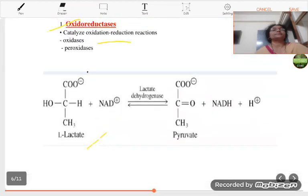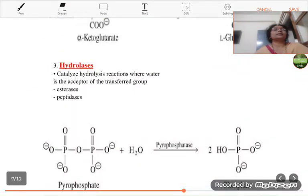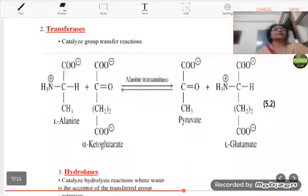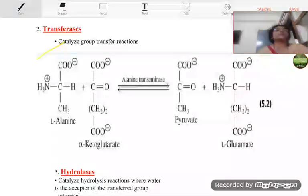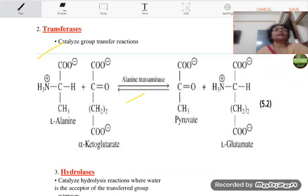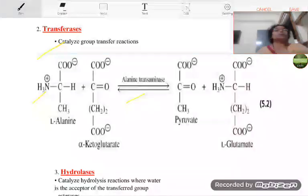These enzymes which catalyze group transfer reactions. This enzyme is transferases. As the name is given to this class, transferases means these enzymes catalyze group transfer reactions. For example, we have taken here alanine transaminase enzyme which transfers the amine group from L-alanine to alpha-ketoglutarate so that the L-glutamate is formed.